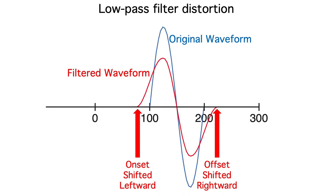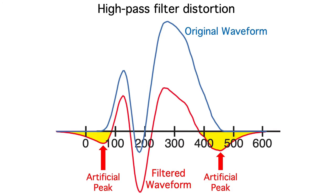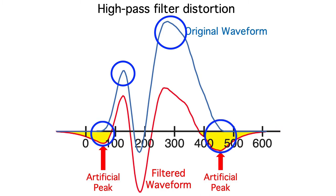Lowpass filters blur the onset and offset times of the ERP waveform. In this example of a 12 Hz lowpass filter, you can see that the onset time is shifted leftward and the offset time is shifted rightward. Highpass filters are even worse. In this example of a 2.5 Hz highpass filter, you can see that the positive peaks of the original waveform are preceded and followed by artifactual negative peaks in the filtered waveform.